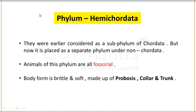Now if we talk about Hemichordata — what does Hemichordata mean? They were previously classified as a subphylum of Chordata, but now they have been given a separate place under phylum non-Chordata. These animals are the half-chordates, and they are vermiform. Body form is soft. They are called Enteropneusta, in which proboscis, collar, and trunk are present. If we talk about pterobranches, this animal is adapted for burrowing.